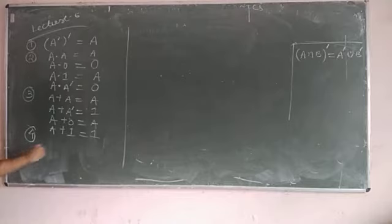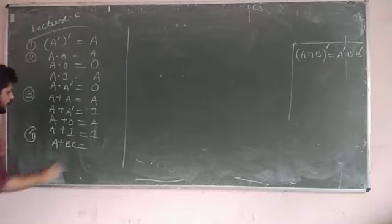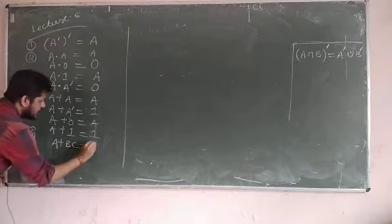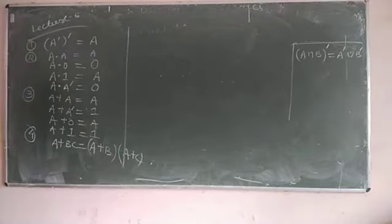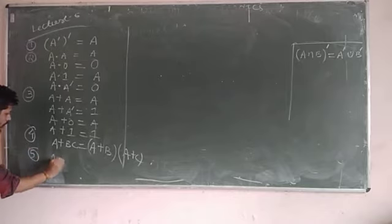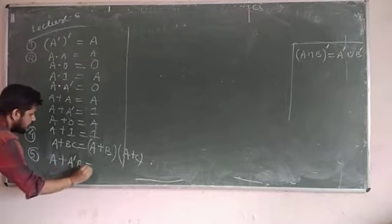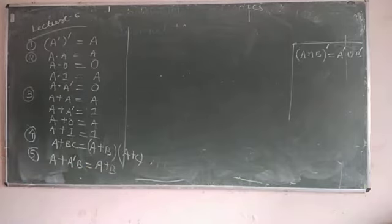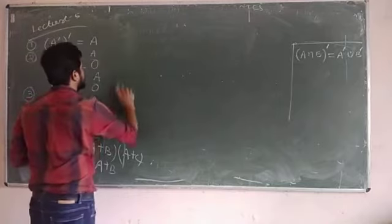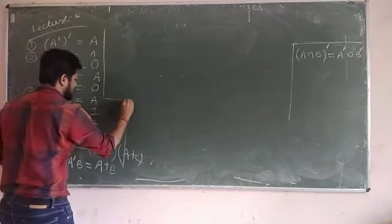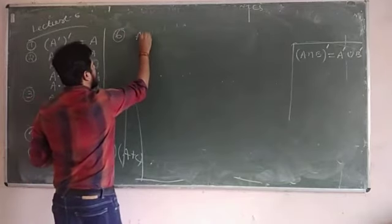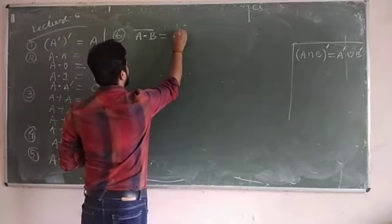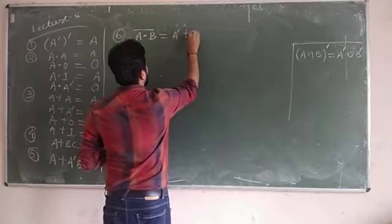Then your distributive law, which is very important: A OR BC equals (A OR B) AND (A OR C). From your absorption law: A OR (A complement · B) equals A OR B. Then De Morgan's law — the sixth formula: (A AND B) complement equals A complement OR B complement.